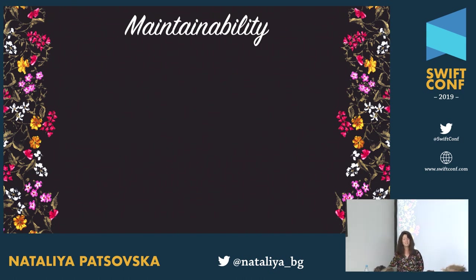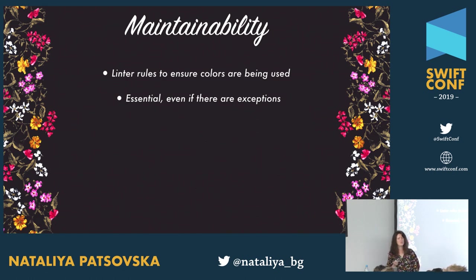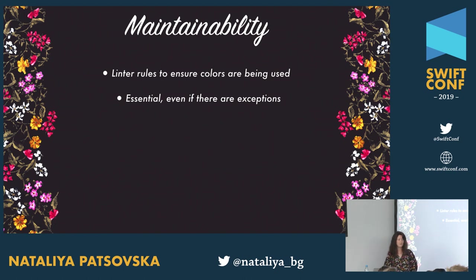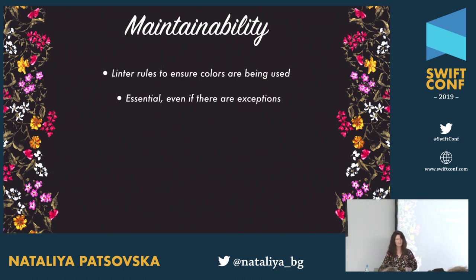Codebases evolve, so you need to keep this maintainable. I strongly recommend adding linter rules to ensure semantic colors are used everywhere and people don't just create a new RGB initializer inline. Add linters even if you're not fully ready — if you have a huge app and can't cover everything, cover as much as you can starting with the easy things like action color and text colors, then add the linter where it's cleaned up. It's okay to have exceptions, but at least you know what's in good shape.